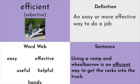Our next word is efficient. Efficient is an adjective, and it's an easy or more effective way to do a job. When something is efficient, you figure out a way to do more and use less energy. Word web words: easy, effective, useful, helpful, handy. Our sentence: using a ramp and wheelbarrow is an efficient way to get the rocks into the truck — it's easier than picking the rocks up and throwing them in. Using the ramp and wheelbarrow, you can carry more rocks and it doesn't use as much energy. Efficient means being able to do more with less.